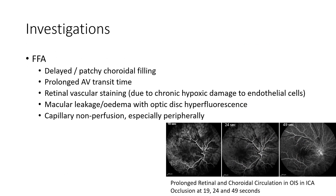Coming to the investigations done for a case of ocular ischemic syndrome, FFA can be done. It will show delayed or patchy choroidal filling, prolonged arteriovenous transit time, retinal vascular staining due to chronic hypoxic damage to endothelial cells, macular leakage or edema with optic disc hyperfluorescence. There can be capillary non-perfusion, especially peripherally. These are FFA images showing prolonged retinal and choroidal circulation in a case of ocular ischemic syndrome.